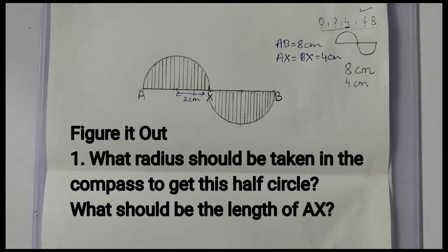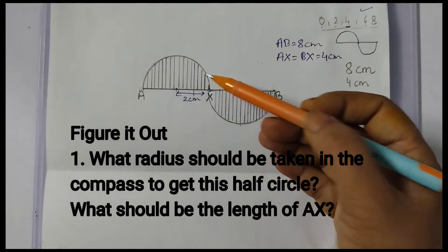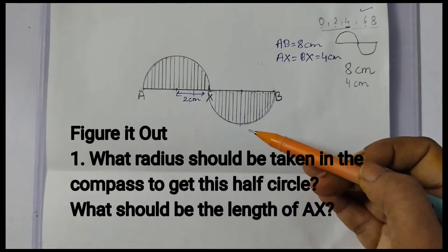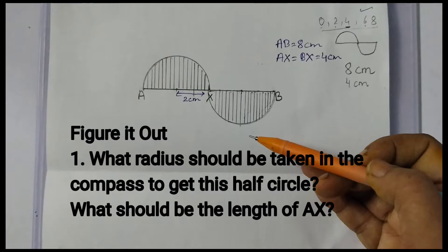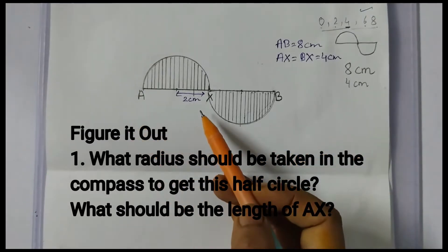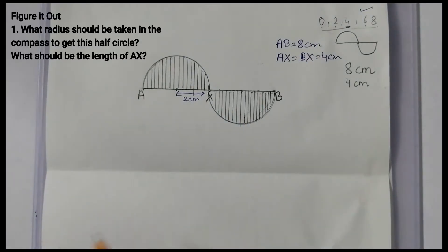The first question of figure it out is related to this construction. It says what radius should be taken in the compass to get this half circle. We can see here one half circle is here and one is here. So what radius should be taken and what should be the length of AX.